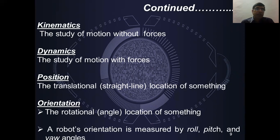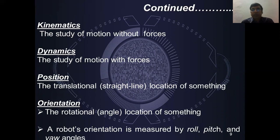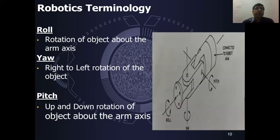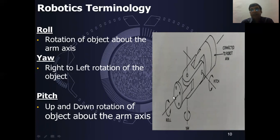The next term is Position — the translational location of something. Rotational location of something is called orientation. The robot's orientation is measured by roll, pitch and yaw angles. You can see the three axes which help define its orientation. Roll refers to the rotation of the robot arm along its own axis.